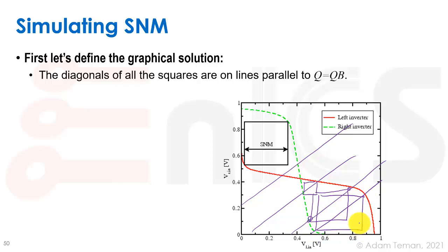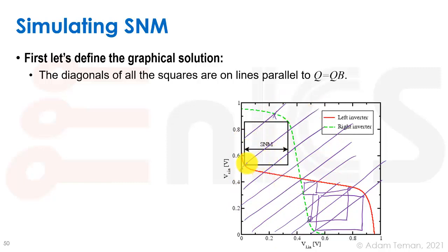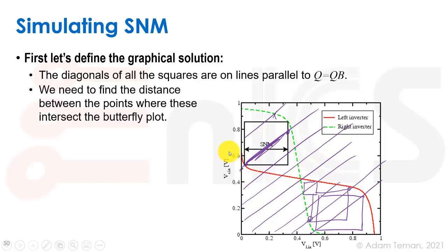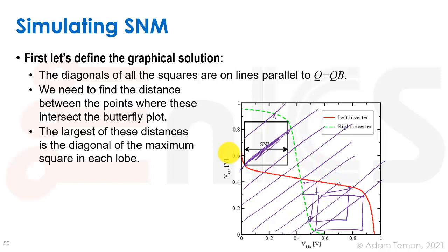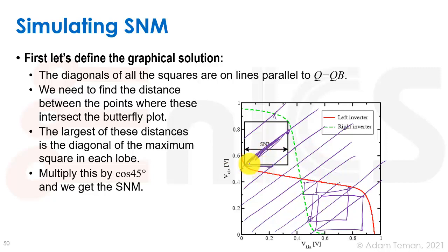If we run all of these diagonals across the whole setup and see where they intersect with the two VTCs, the biggest diagonal between the two lobes gives us the maximum size square. We need to find the distance between the points where these diagonals intersect with the butterfly plot — the largest one is our SNM. Don't forget: this is the diagonal, and the SNM is defined as the side, so we multiply by cosine 45 degrees to get the SNM.